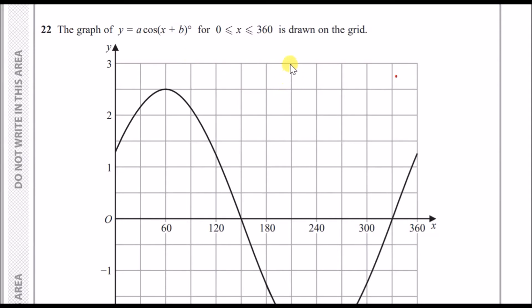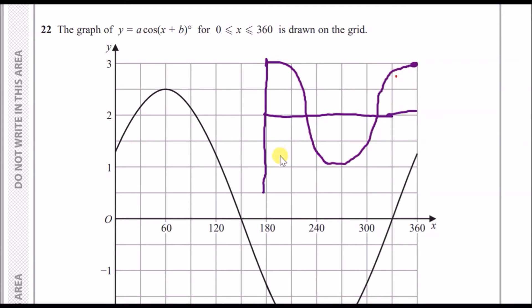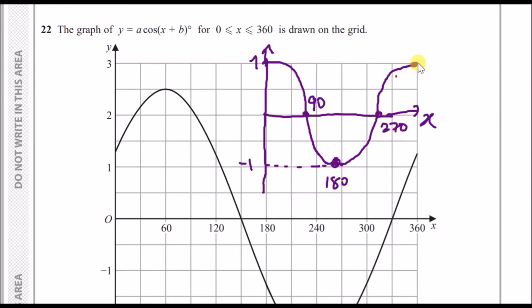For a standard cos graph, it looks like a bucket — it sweeps down, goes up, and ends. The maximum value is 1 and the minimum is minus 1. The unique feature is that at every key point — peak and bottom — the x-axis goes up in 90s: so we have 90, 180, 270, and 360 degrees along the x-axis.